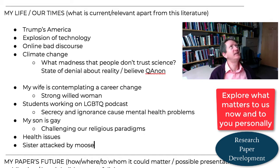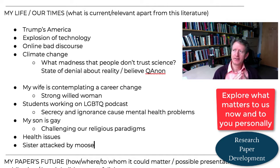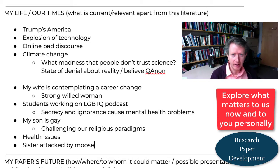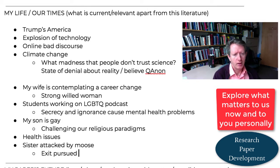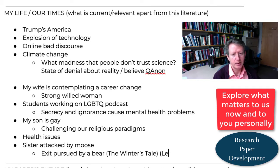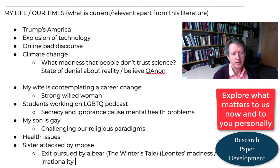Sister attacked by moose — please give me a way to talk about this with Shakespeare. I thought of Bottom in Midsummer Night's Dream who gets changed into having the head of an ass — that's the immediate connection I'm making. There's The Winter's Tale where you have the most famous stage direction of all time: 'Exit pursued by a bear.' Maybe there's something to that. There's serious madness going on — Leontes' madness and irrationality, his jealousy about his friend and his wife, unfounded things. It's like worse than Othello.